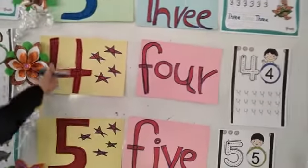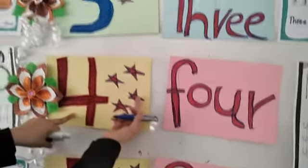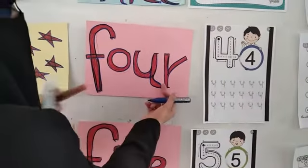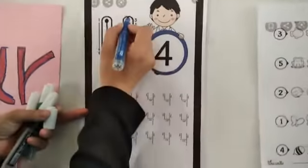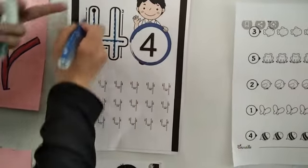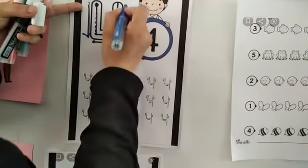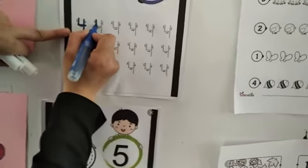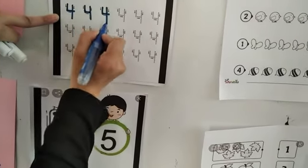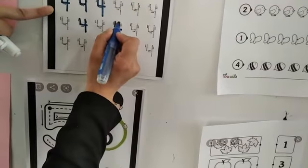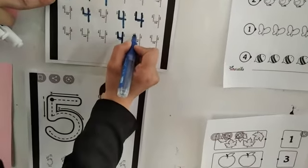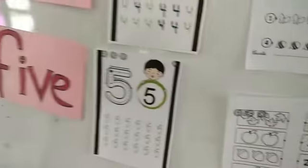We move to number 4. This is number 4 — one, two, three, and four stars. This is the word for 4. How do we write number 4? We have three steps: first step, second step, and third step. We write number 4 in this way.